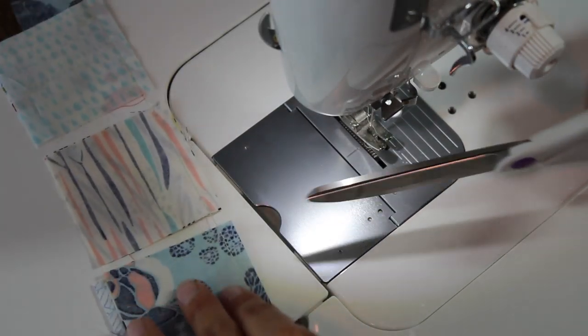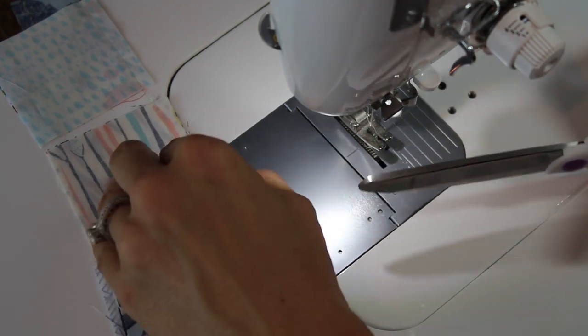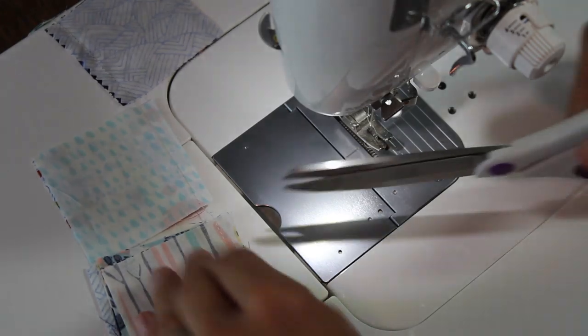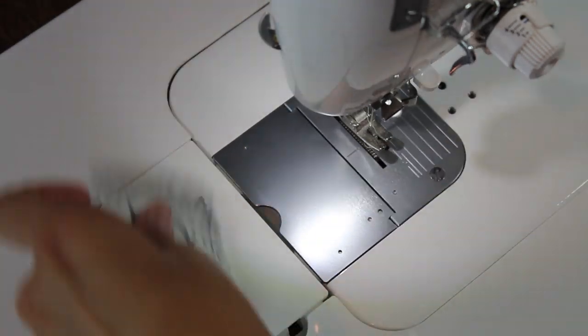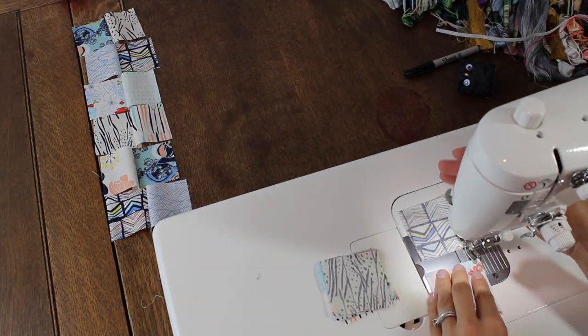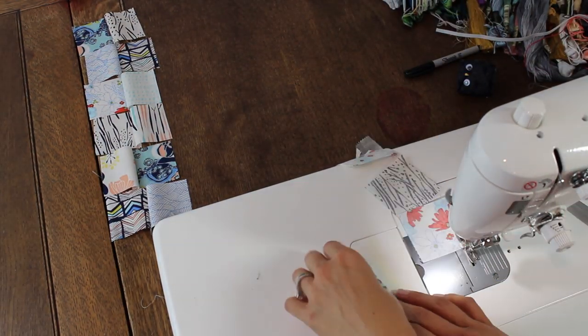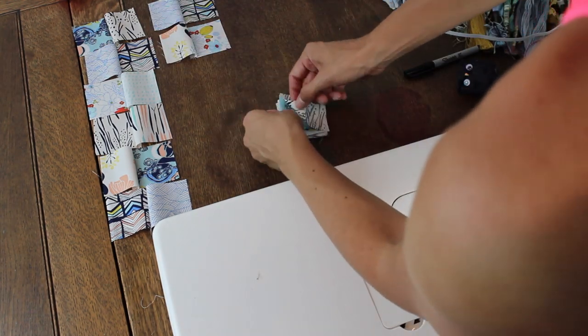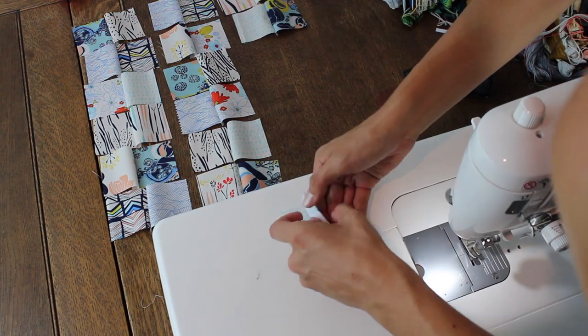Then I'm going to trim my threads and stack them so that I know exactly where they are supposed to be in relation to the other patchwork. You just want to keep it nice and organized. My way is not the best way necessarily. Whatever works for you is good. So now I'm just going to lay these out on my table here and do my next two columns and lay them out just so that I make sure I didn't make any mistakes along the way.